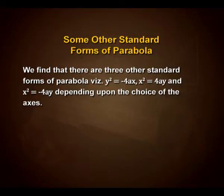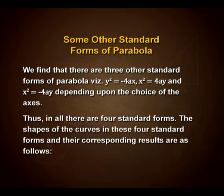There are three other standard forms of parabola: y² = −4ax, x² = 4ay, and x² = −4ay, depending upon the choice of the axis. Thus in all there are four standard forms. The shapes of the curves in these four standard forms and their corresponding results can be listed in a table.